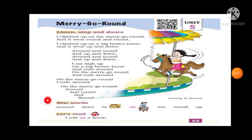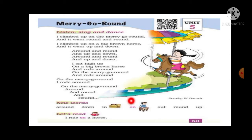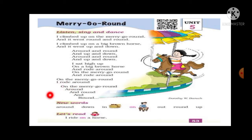Now friends, let's see the new words. Around means everywhere. Down means niche. In means andar. On means upar. Out means bahar. Round means circle. And up means upar. So students, these are your new words. Now let's read: I ride on a horse.